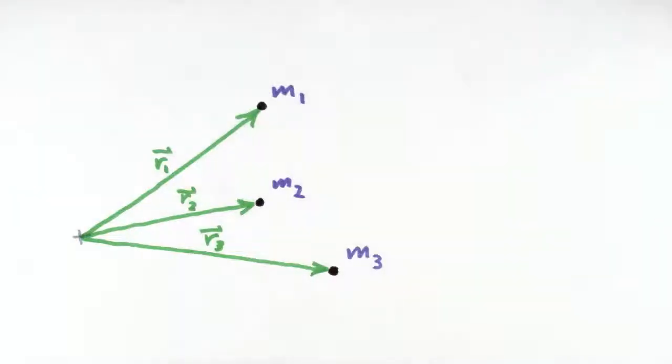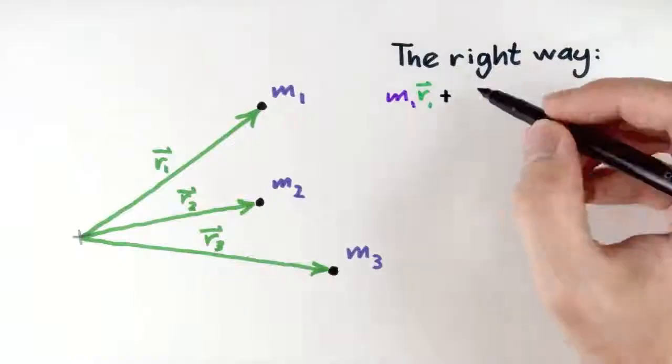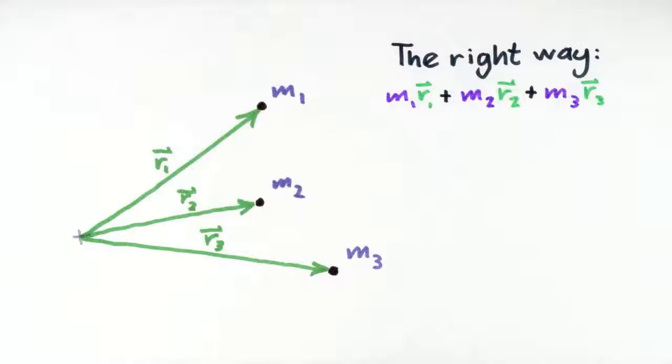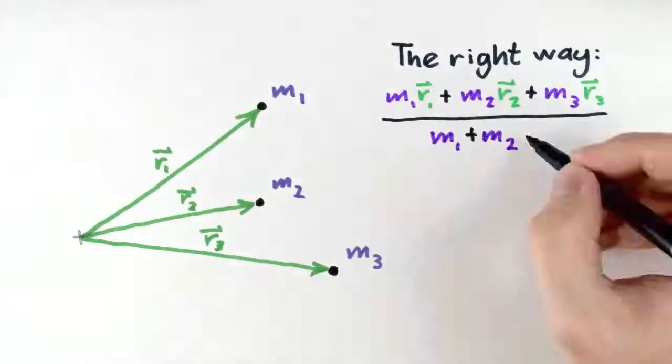So here's a way to fix this. Take the position vector of each point mass and multiply it by the mass, and then add up all these terms, and after that divide by the total mass. The result is what we call the center of mass.